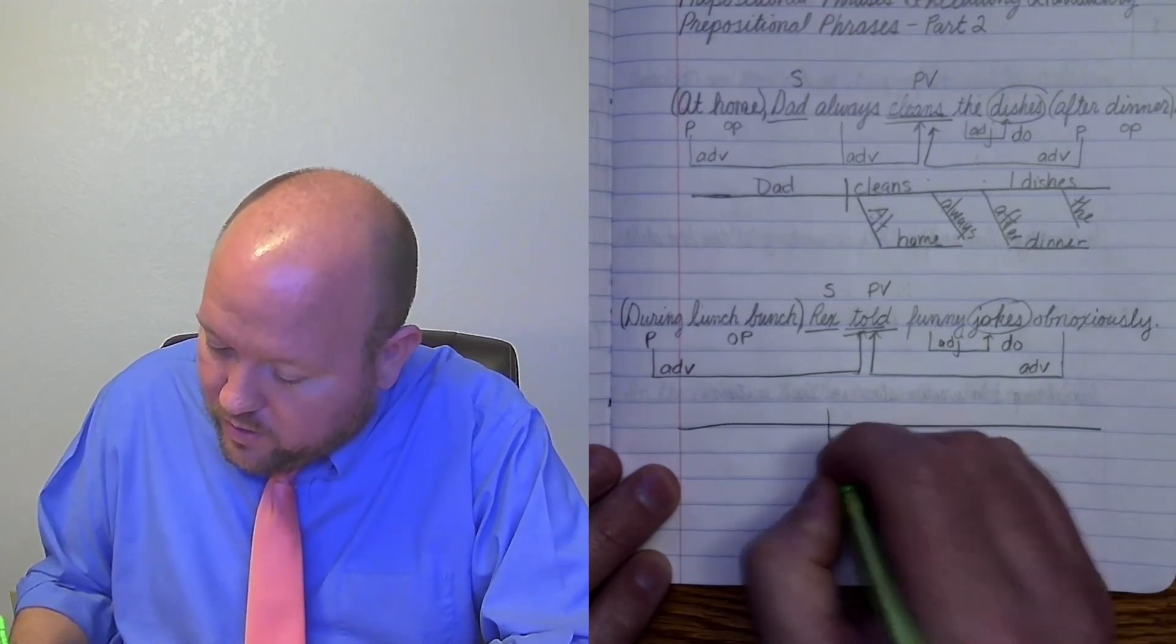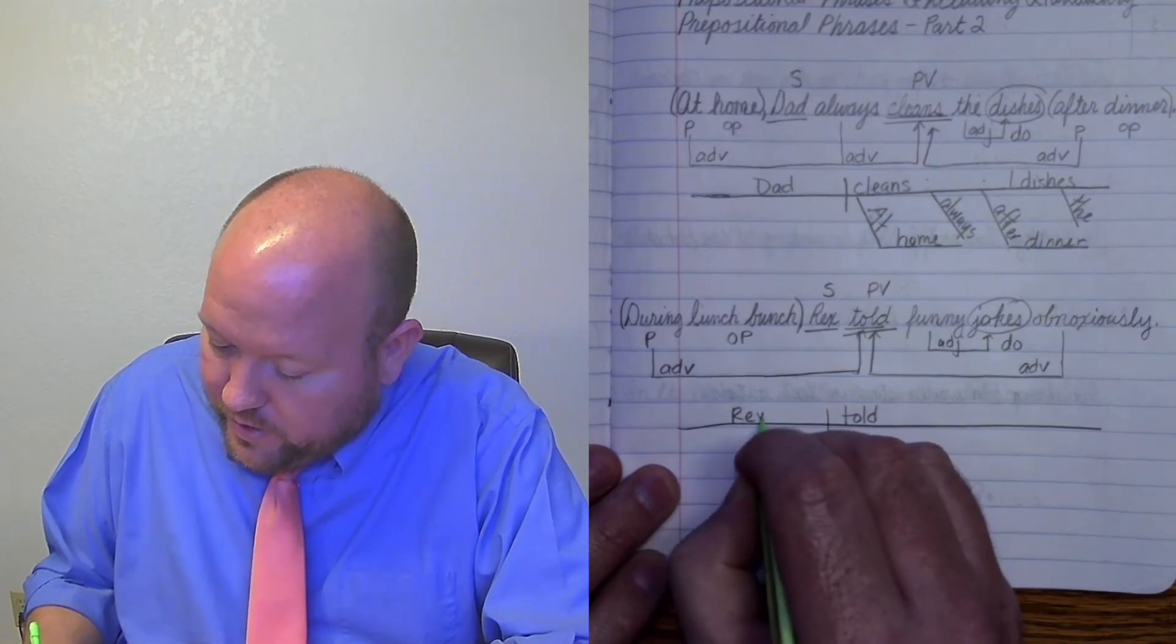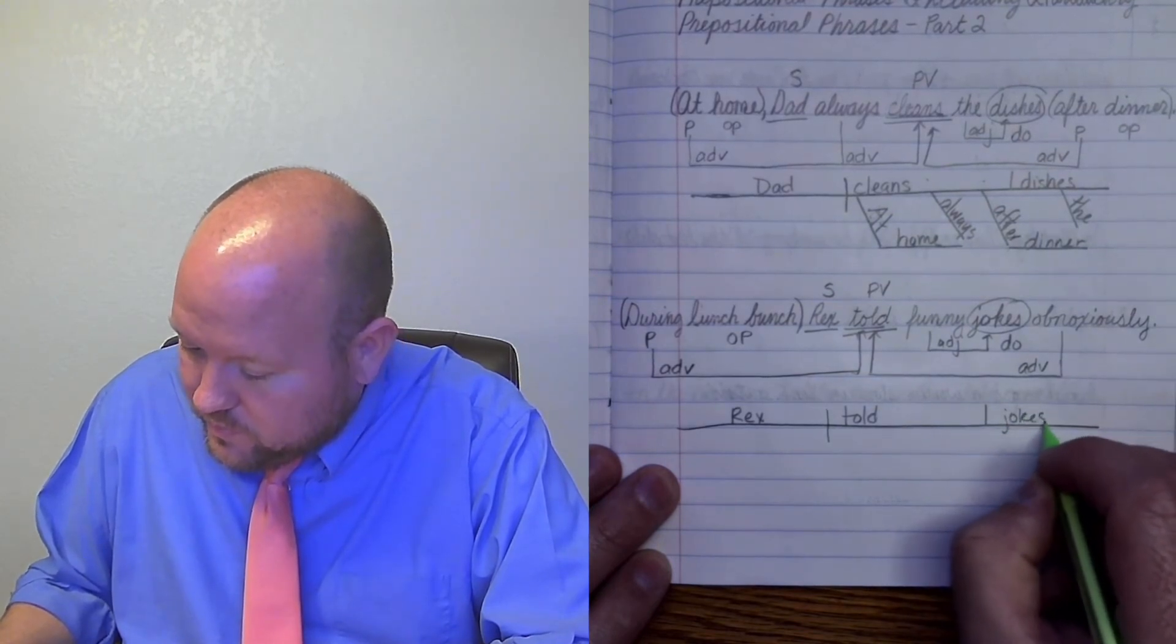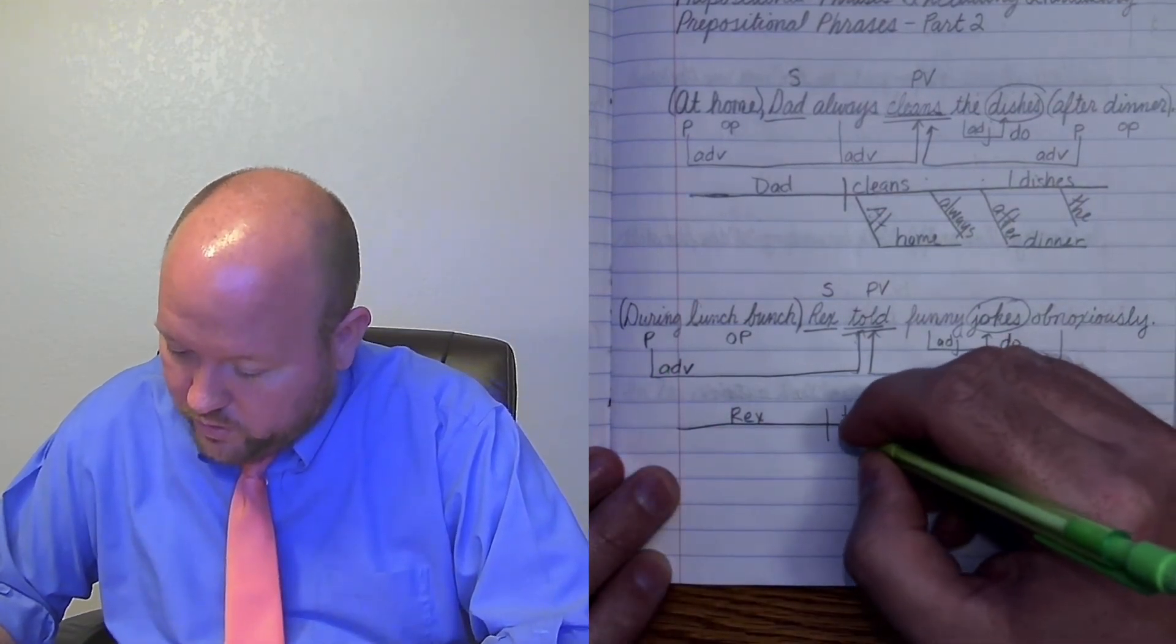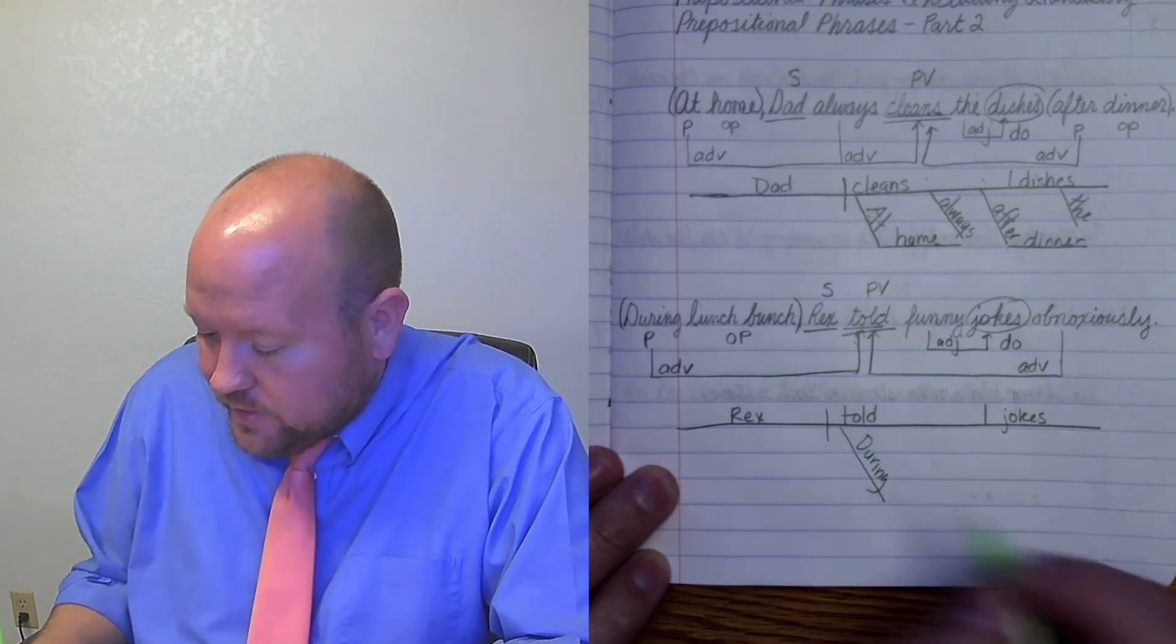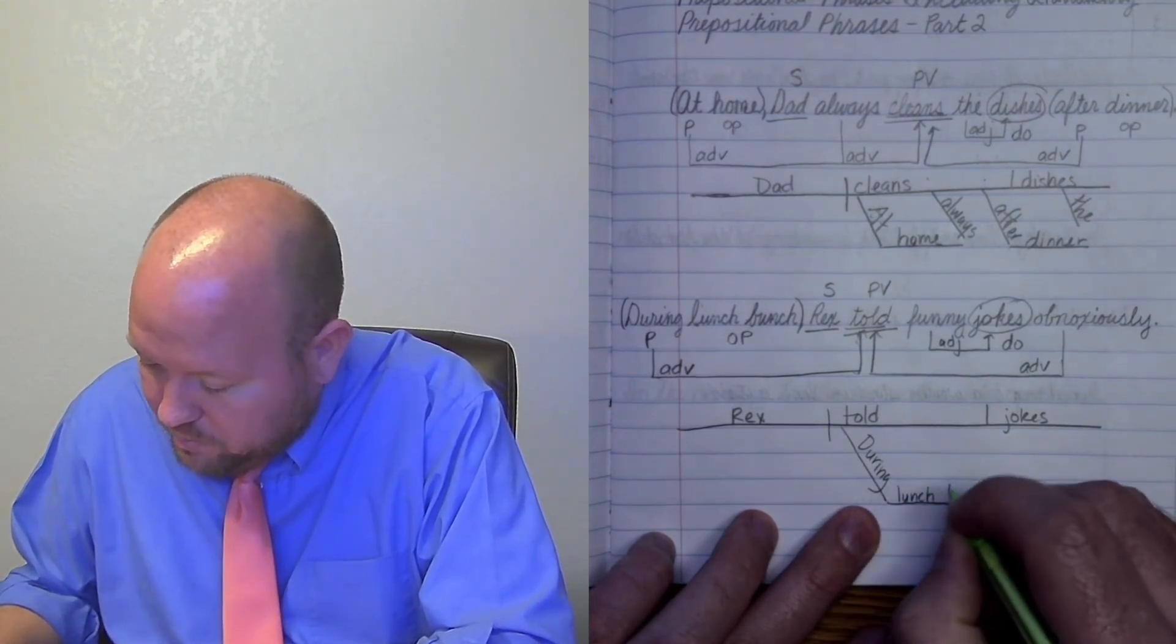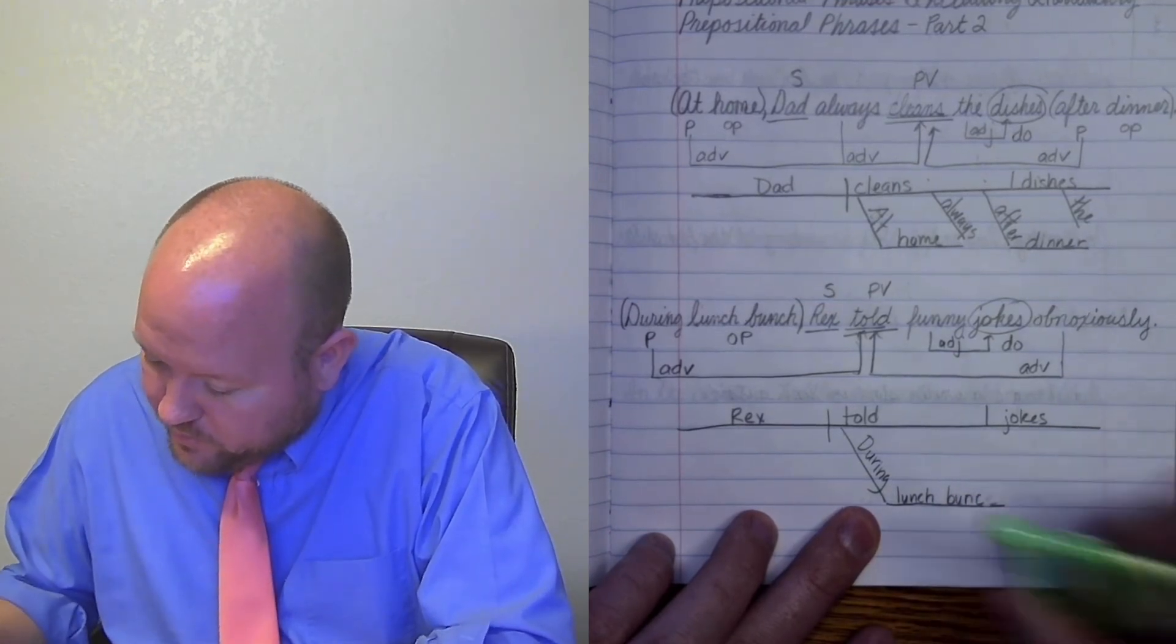So here I have told, Rex, and I have my direct object, which I already know, which is jokes. During lunch bunch. That tells us we've already drawn our arrow. We know it's to told. So we're gonna put during here. Capitalized like it is in my sentence. And then lunch bunch is functioning together. So lunch bunch. So that's a title for one specific thing. So lunch bunch.